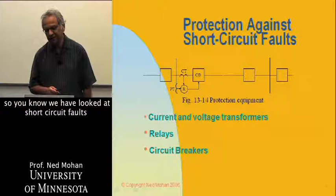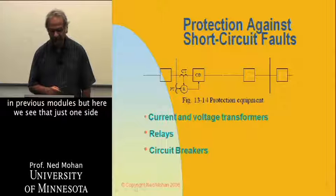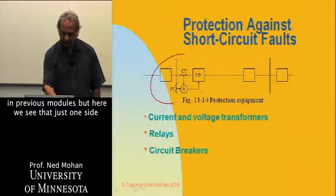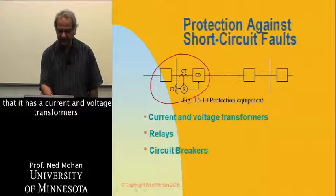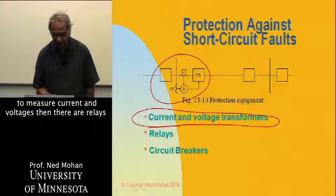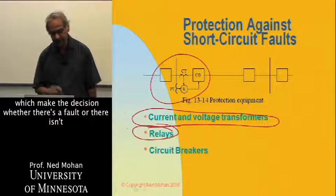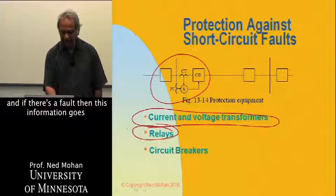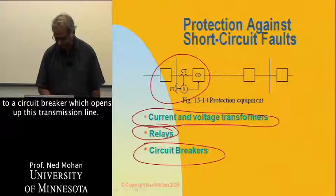We had looked at short circuit faults in previous modules. Here we see that just one side of the transmission line is shown. It has current and voltage transformers to measure current and voltages. Then there are relays which make the decision whether there is a fault or not. If there is a fault, this information goes to a circuit breaker, which opens up the transmission line.